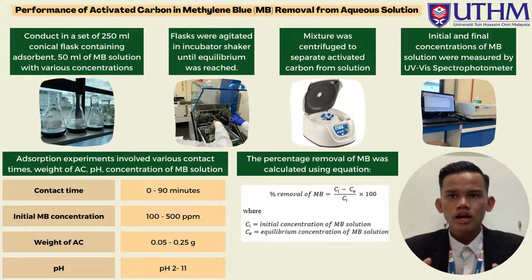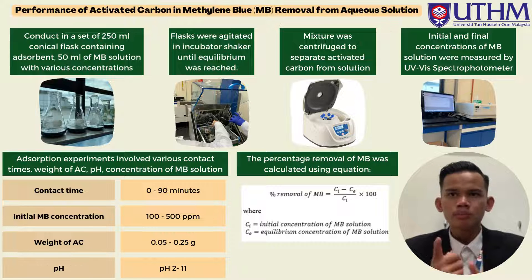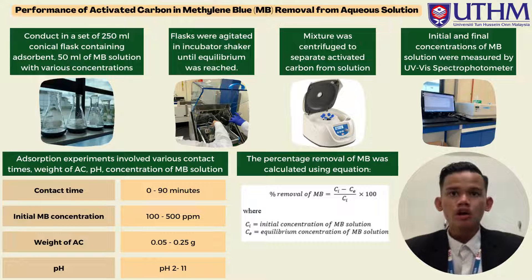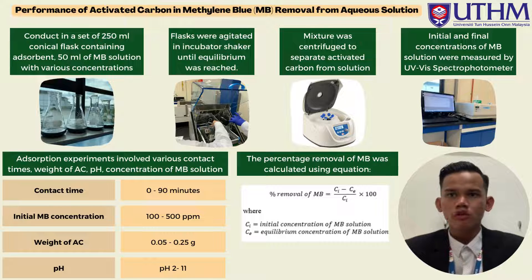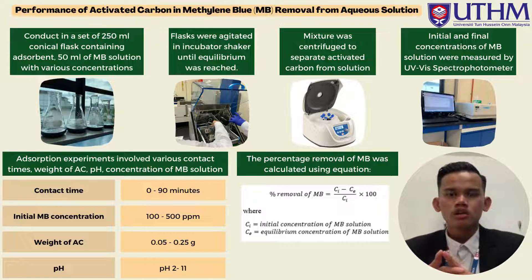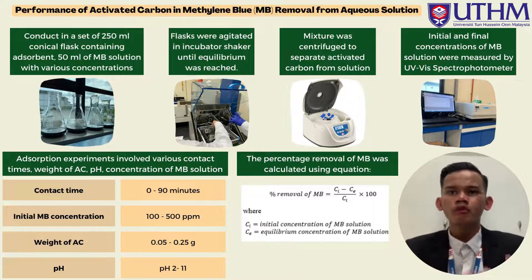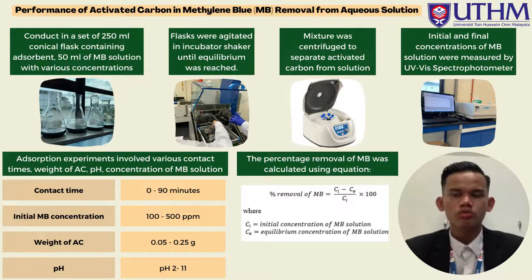The adsorption experiments also involved varying contact time, weight of activated carbon, and pH of the Methylene Blue solutions. The value ranges used were: Methylene Blue concentration from 100 to 500 ppm, contact time from 0 to 90 minutes, pH from 2 to 11, and weight of activated carbon from 0.05 g to 0.25 g. The percentage removal of Methylene Blue was calculated using the equations shown in this slide.